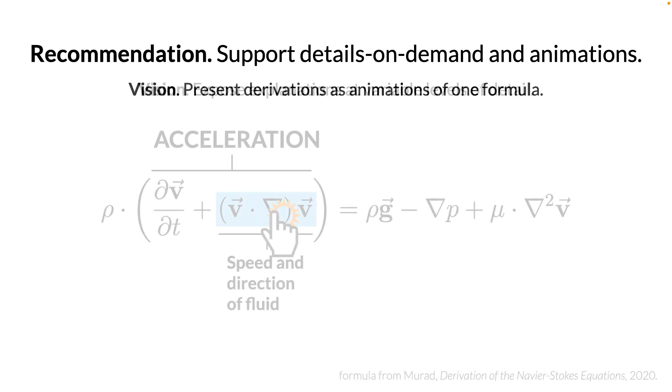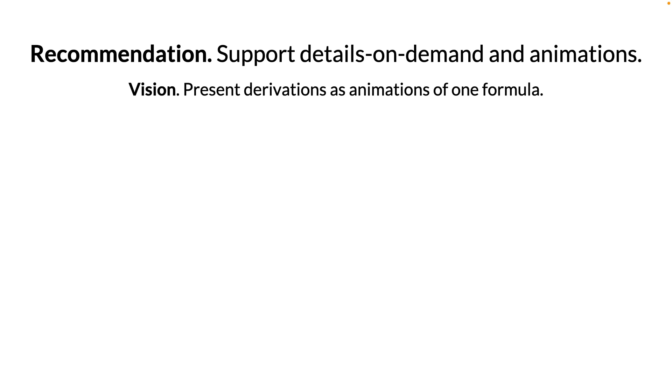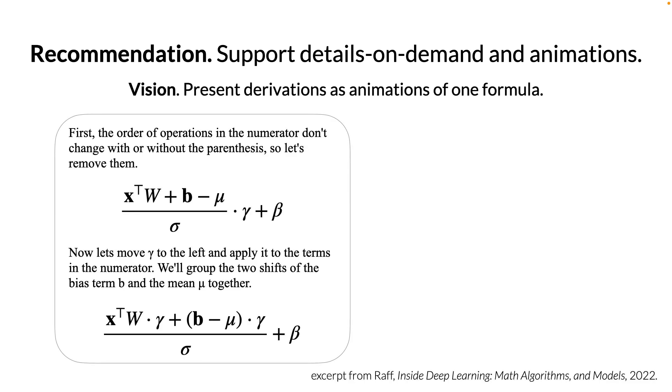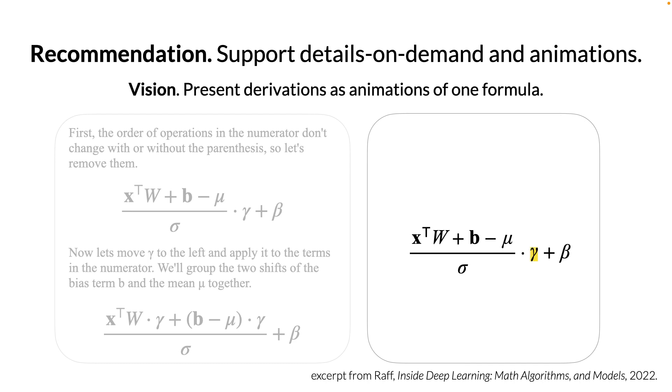Another vision was to show mathematical derivations as animations. For instance, consider this derivation, shown in a conventional format, as a series of formulas, each one derived from the last one, with textual descriptions of how each formula was derived. This one step of the derivation could be shown by highlighting the position of gamma in the first formula, and then revealing how it is distributed in a multiplication by sliding it into its two new positions.